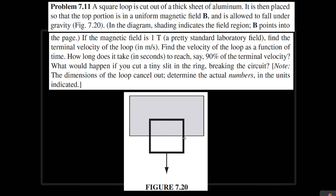In this problem, as this loop keeps falling down, the flux within this region is going to decrease. Originally there is a magnetic field pointing into the page, and once it starts falling, there's going to be less magnetic field pointing inside of the page. Nature is going to try to restore that order and induce a current where the magnetic field points inside. Using the right-hand rule, the current is going to go clockwise.